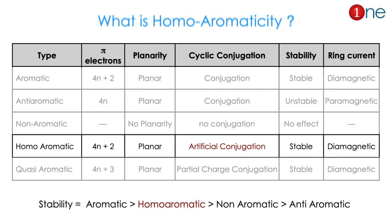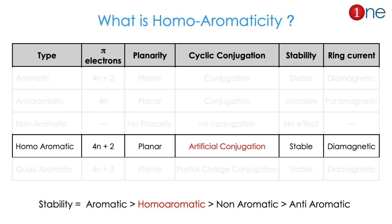What differentiates it from others is artificial conjugation — meaning created conjugation. Everything else is the same as aromatic: 4n+2 pi electrons, planarity, more stability, and diamagnetic ring current. In terms of stability, it is next to the aromatic system — lesser than aromatic, but better than non-aromatic and anti-aromatic systems.